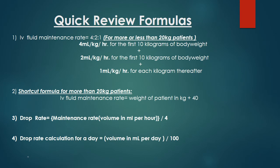Quick review of formulas. Formula 1: IV fluid maintenance rate uses the 4-2-1 rule for patients of any weight — 4 mL/kg/hr for first 10 kg, 2 mL/kg/hr for next 10 kg, 1 mL/kg/hr for each kilogram thereafter. Formula 2: Shortcut for patients more than 20 kg — maintenance rate equals weight in kilograms plus 40. Formula 3: Drop rate equals volume in mL/hr divided by 4. Formula 4: For daily volumes, drop rate equals volume in mL/day divided by 100.